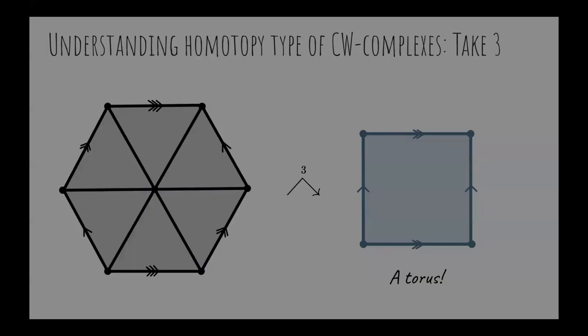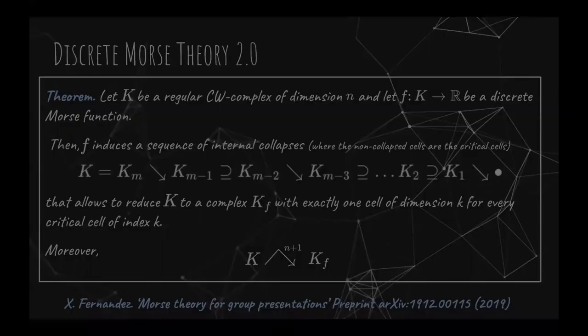Here you have the statement of the refinement of Forman theorem that we have used in the previous example. You start again with the regular complex of dimension n and a discrete Morse function. Then, it can be proved that there exists a sequence of internal collapses that allows to explicitly transform K into a reduced complex with exactly one cell for each critical cell. Moreover, it can be proved that there is an n plus 1 deformation between the original complex and the Morse complex. In particular, we recover its homotopy type. For details of the proof, check the article in the bottom.